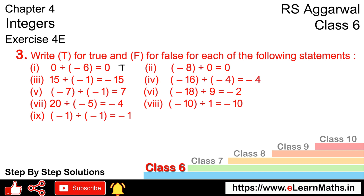Let's do the next part. Next part: minus eight divided by zero gives zero — is this true? This is a very important point. If you divide any number by zero, the answer is infinite. Zero in the numerator gives zero, but if zero is in the denominator, the answer is infinite, not zero. Hence this is FALSE.